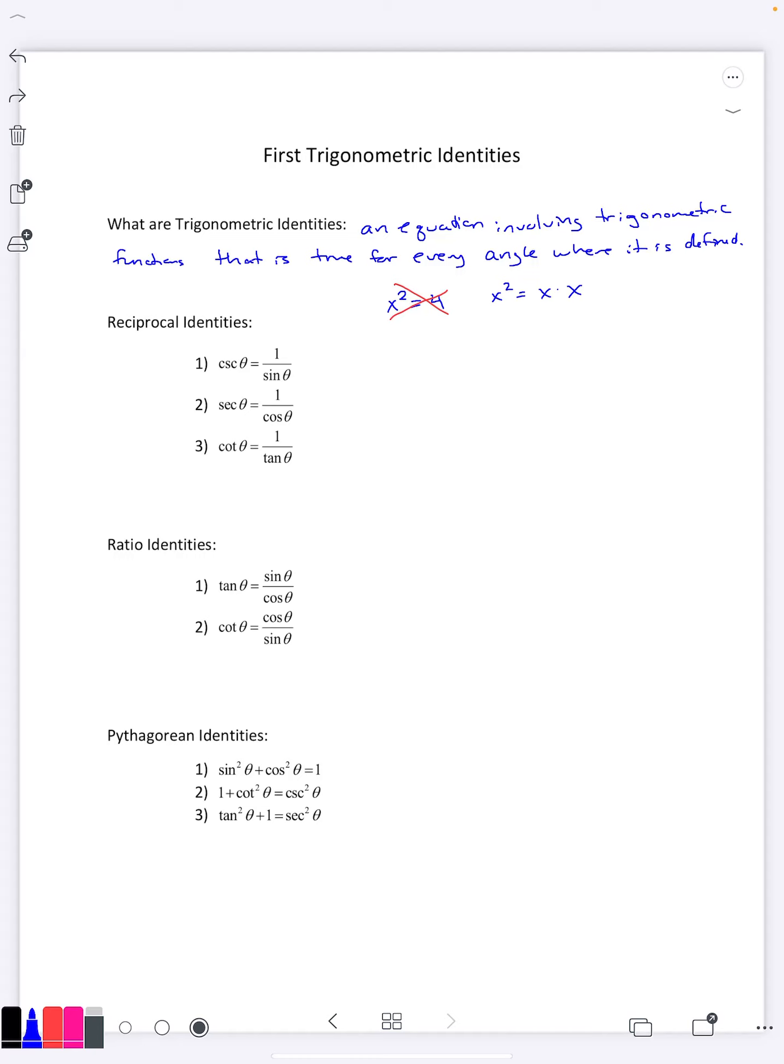Now, the first three are the ones that I actually already talked about when introducing the trig functions. Cosecant is the reciprocal of sine. Secant is always the reciprocal of cosine. And finally, cotangent is the reciprocal of tangent. So nothing new on those three. It's just the same thing I had mentioned in the previous video, but now I'm calling them trig identities.